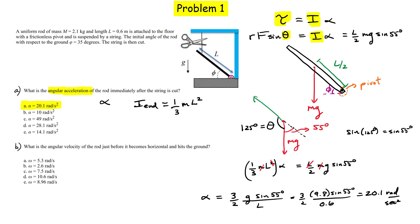Here's question B. It says, what is the angular velocity of the rod just before it becomes horizontal and hits the ground? We've got five choices here. So now we have to think about how to solve this problem. So let's go to the next page. Just give myself a little bit more space.